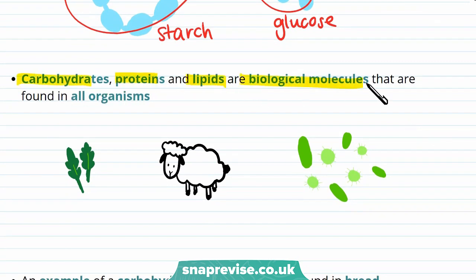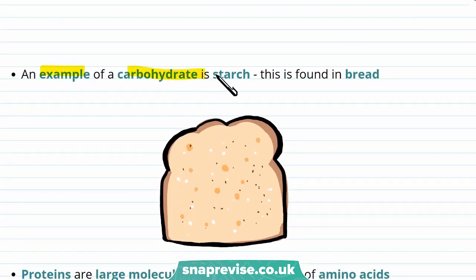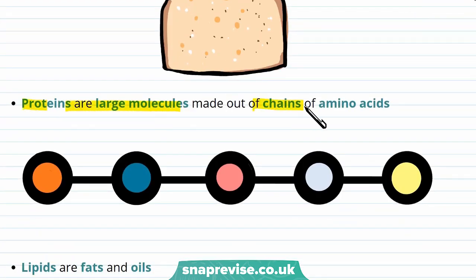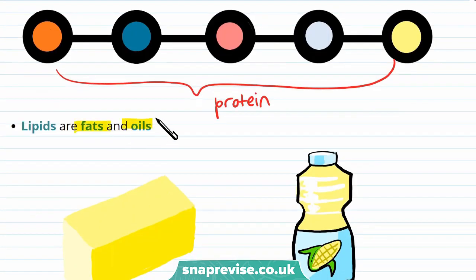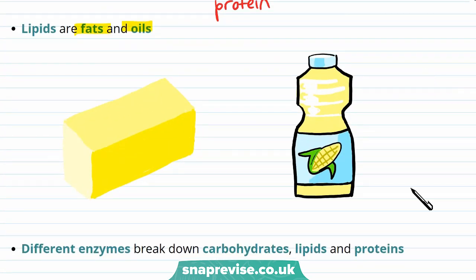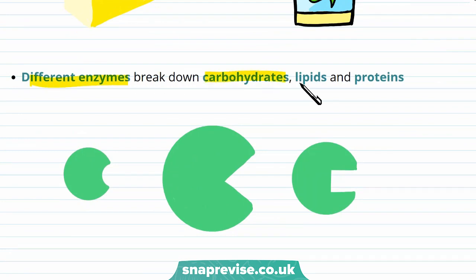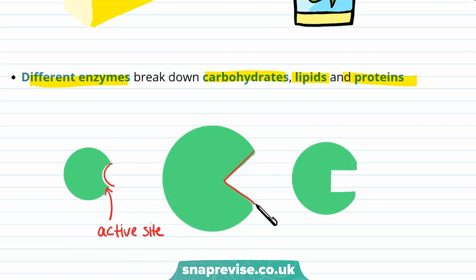Carbohydrates, proteins and lipids are biological molecules that are found in all organisms — in plants, animals, and even microorganisms. An example of a carbohydrate is starch, found in bread and potatoes. Proteins are large molecules made out of chains of amino acids. Lipids are fats and oils, found in things like butter and vegetable oil. Different enzymes break down carbohydrates, lipids and proteins; for example, one enzyme might break down a particular carbohydrate due to its specific active site, while other enzymes break down other molecules depending on the shape of that active site.